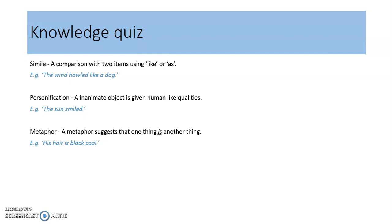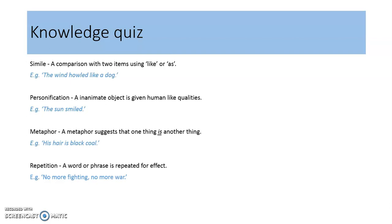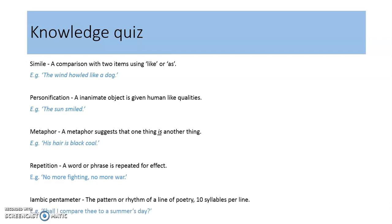Number three, a metaphor suggests that one thing is another thing. For example, 'his hair is black coal.' Number four, repetition — a word or phrase is repeated for effect. For example, 'no more fighting, no more war.'